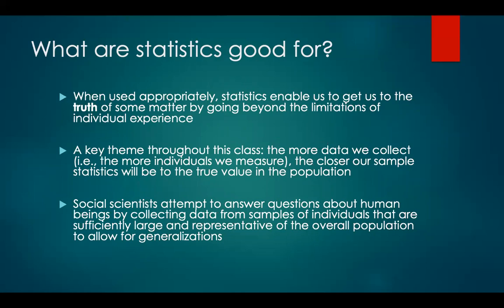When statistics are used appropriately, they give us the ability to get to the truth of some matter by going beyond the limitations of our individual experience. A key theme throughout this course is that the more data we collect — the more individuals we measure and study — the closer our sample statistics will be to the true value in the population. So with larger samples, we are essentially getting closer to the truth. Social scientists generally attempt to answer questions about human beings by collecting data from samples that are large and representative of the overall population, so that we are able to make inferential generalizations about these larger populations.